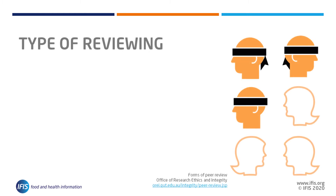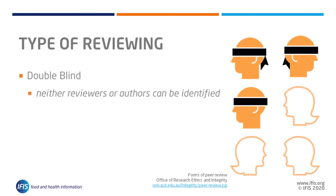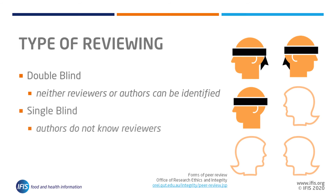The most common forms of peer review involve keeping the identities of reviewers and authors secret through double-blinding, where all author information is removed from a paper and neither reviewers nor authors can be identified, and single-blinding, where only reviewer names are hidden from the author. These models of review may affect how you must format your paper on submission and are therefore worth noting.